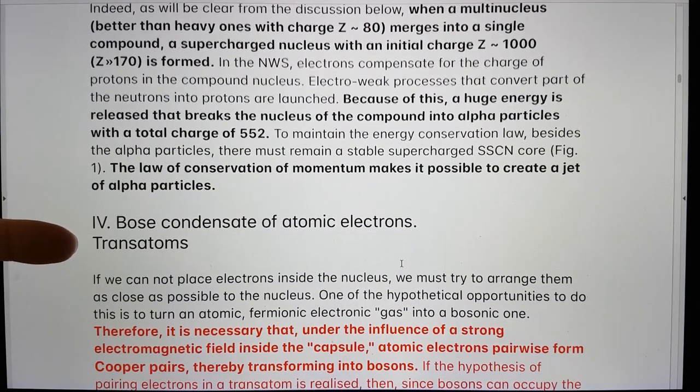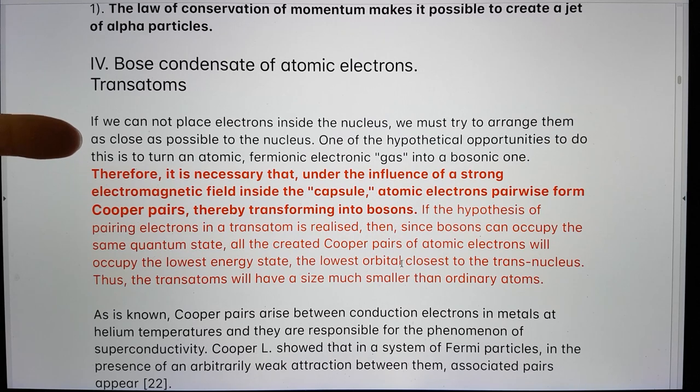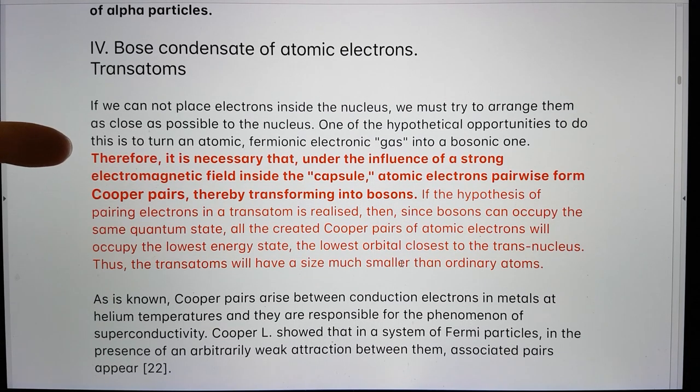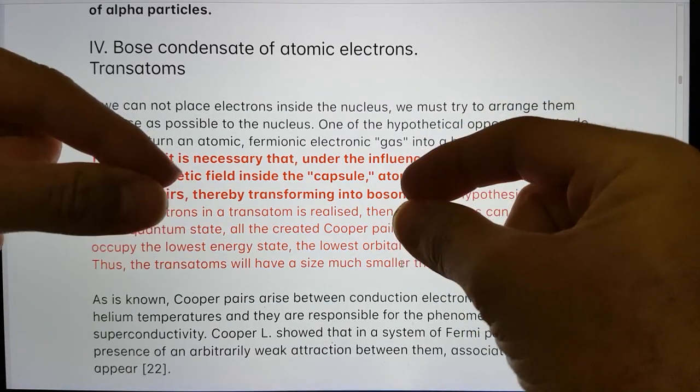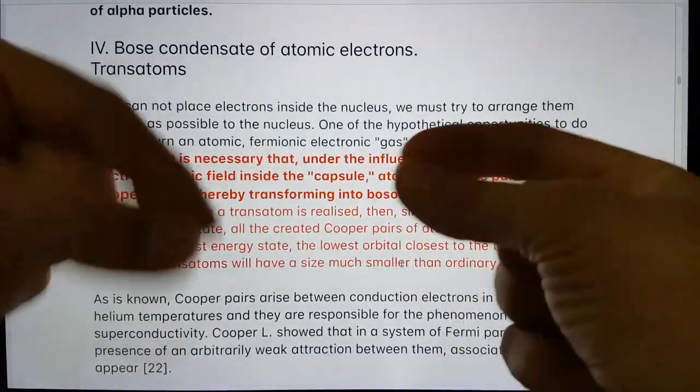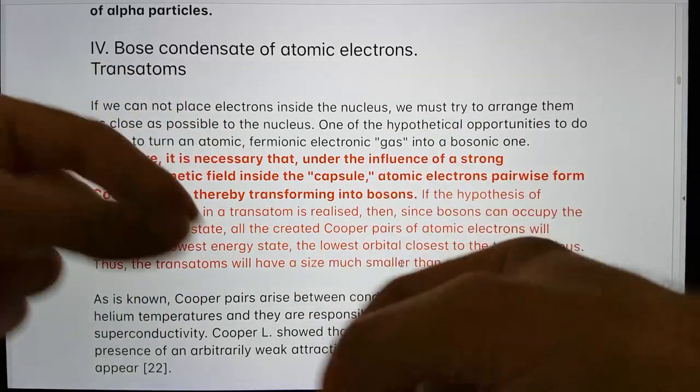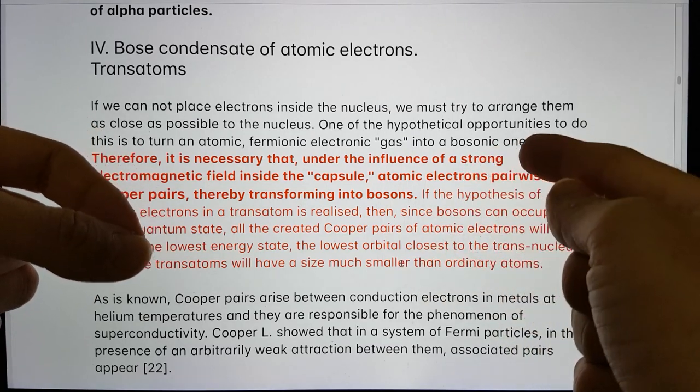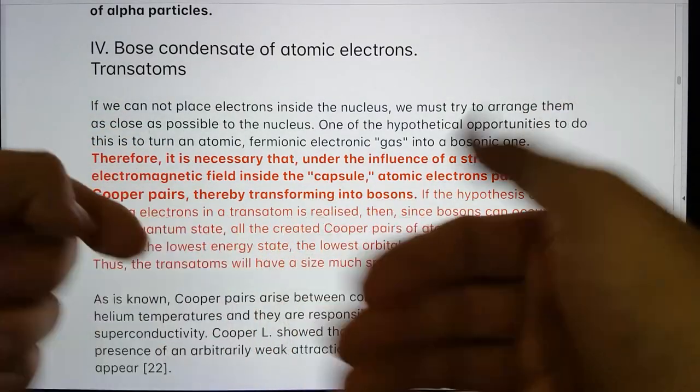So this is where it gets really interesting for me. Bose condensate of atomic electrons transatoms. If we cannot place electrons inside the nucleus, we must try to arrange them as close as possible to the nucleus. One of the hypothetical opportunities to do this is to turn an atomic fermionic electron gas into a bosonic one. Now, electrons normally, because they're fermions, they can't occupy the same space and time. Their charges will repel each other.